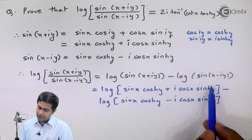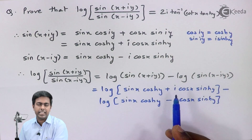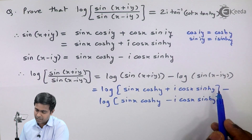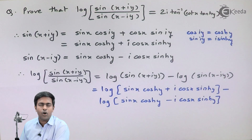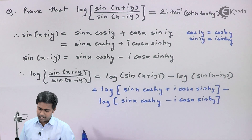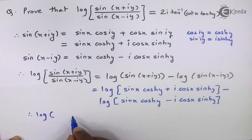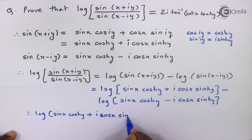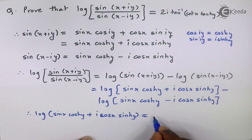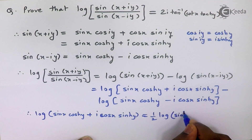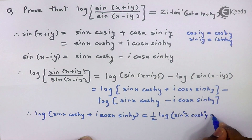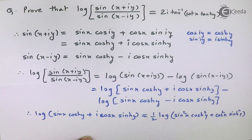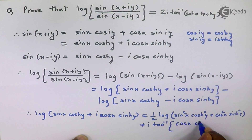Here in the first bracket we have a complex number where sin x cosh y is the real part and cos x sinh y is the imaginary part. Applying the formula for the log of a complex number, log(sin x cosh y + i cos x sinh y) equals (1/2) log(sin²x cosh²y + cos²x sinh²y) + i tan⁻¹(cos x sinh y / sin x cosh y).